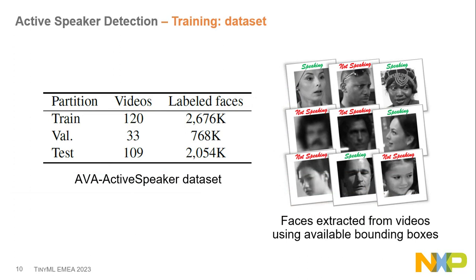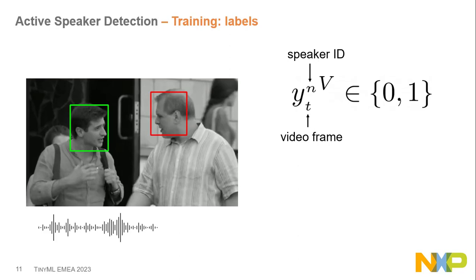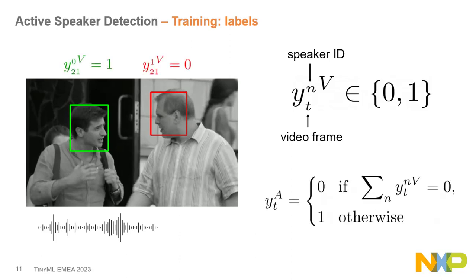To train the model, we use the AVA Active Speaker dataset, the best dataset for this task — a collection of movies from different countries with different languages and resolutions. From this dataset, we use video-based labels: speaking equals one, not speaking equals zero. We also define an audio-based label, which is essentially voice activity detection: if anyone is speaking in the frame, the label equals one; if no one is speaking, it equals zero. Defining two kinds of labels helps disentangle the multi-speaker scenario.